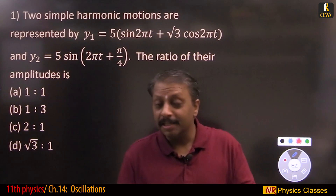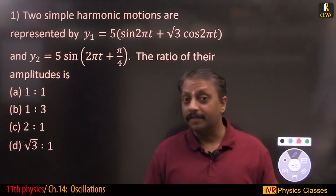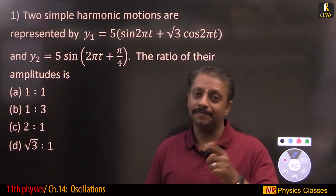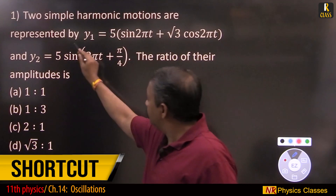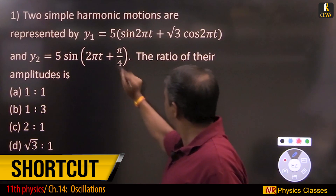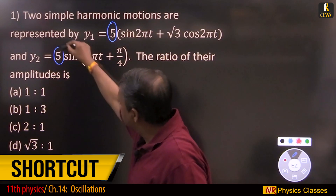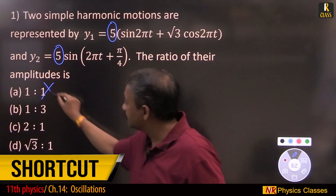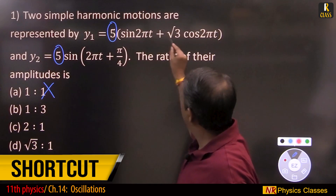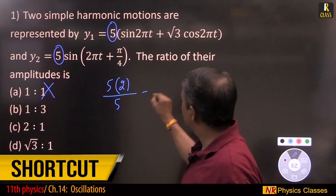How beautiful! A challenging and simple question from CT. Let us solve this using a shortcut in seconds, after which I'll give the explanation. Two simple harmonic motions are represented by y1 and y2. The ratio of their amplitudes: 5 by 5 is 1 to 1 — but that is not the answer. That is a common mistake. Now 5, 5 root 3, 5 into 2 by 5...